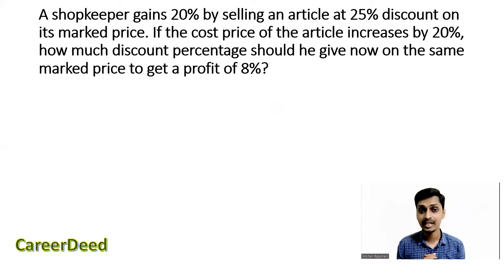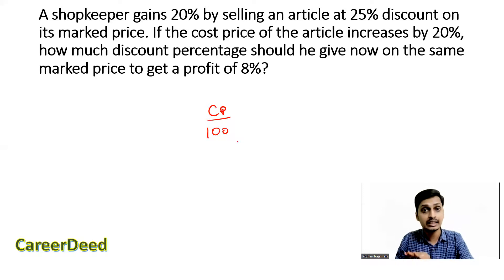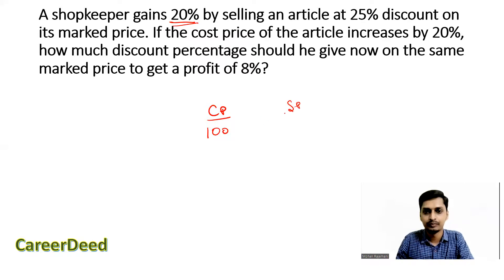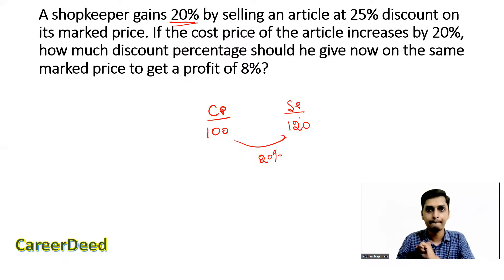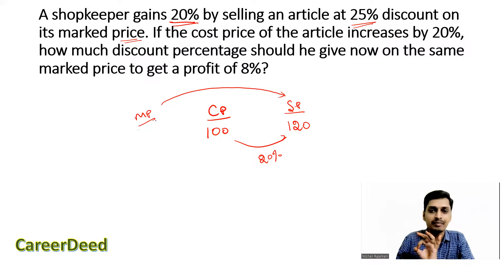Final question: A shopkeeper gains 20% by selling an article at 25% discount on its market price. If the cost price increases by 20%, how much discount percentage should he give on the same market price to get a profit of 8%? Let cost price = 100 rupees. Selling price for 20% profit = 120 rupees. This selling price is 75% of the market price (after 25% discount).